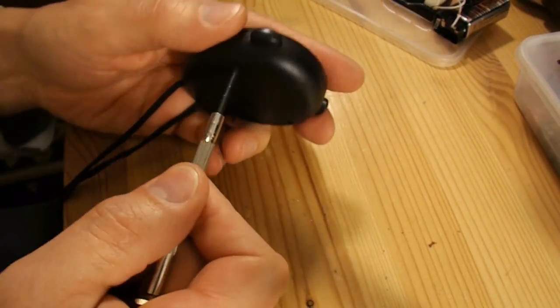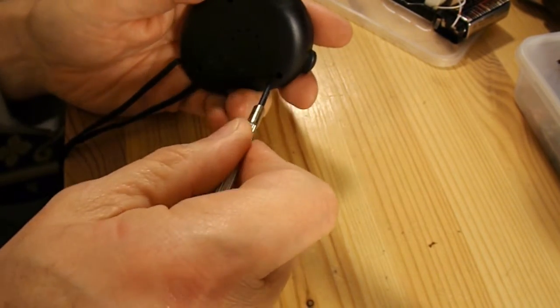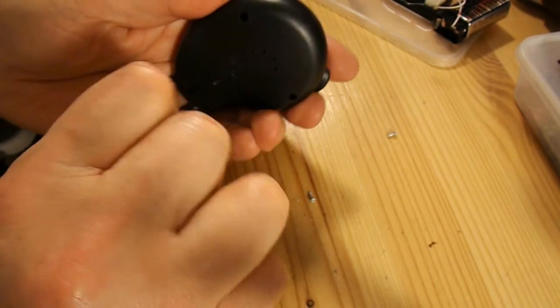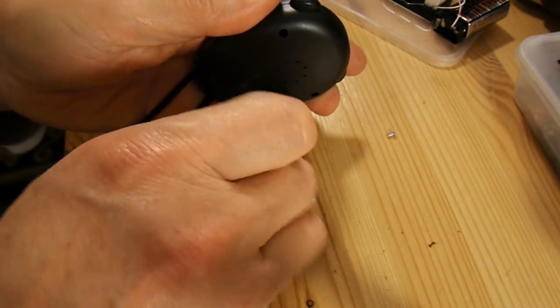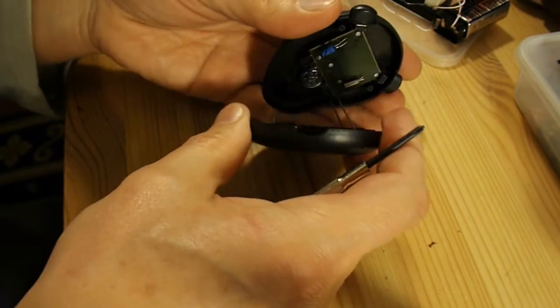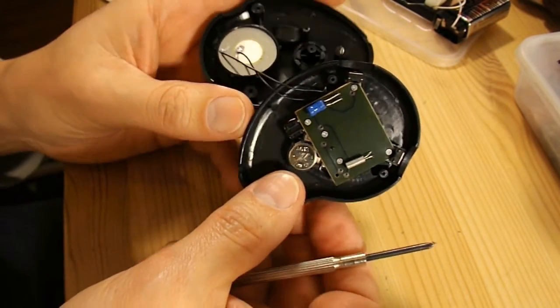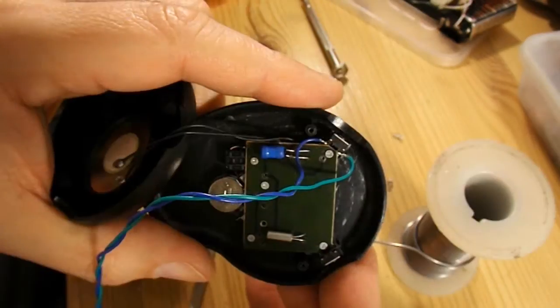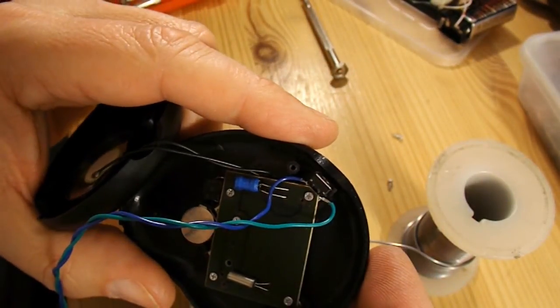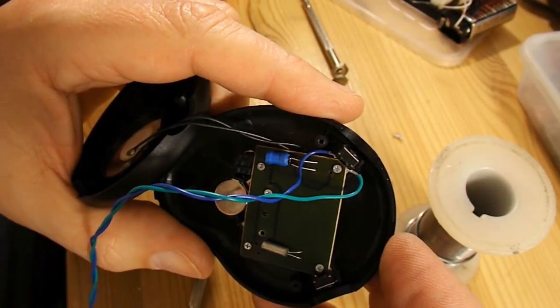Right, let's take this fella apart. Well that looks simple enough. Just a push switch there. Right, there you go, I've just soldered either side of that push switch. Had to take the board off to do it, but there we are. Now I'll put it back together.